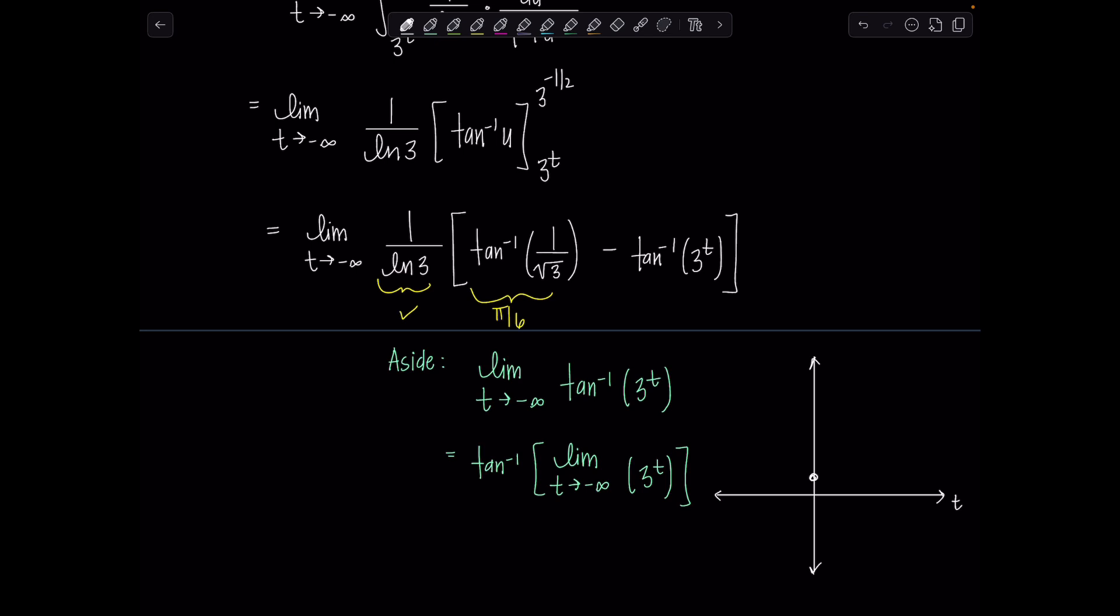They'll go through zero, one, increase this way, and then they have horizontal asymptote in the negative x direction, negative t direction in this case. So this quantity right here, this is approaching zero. That's right. Now, do we know what tan inverse of zero is?